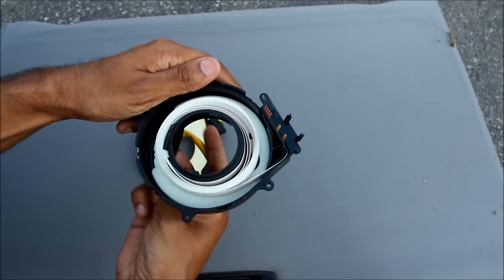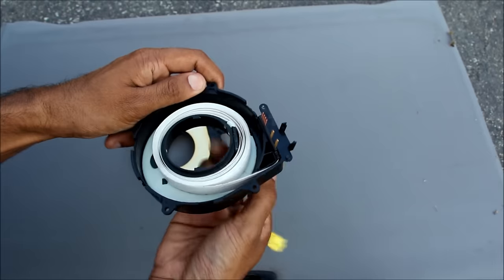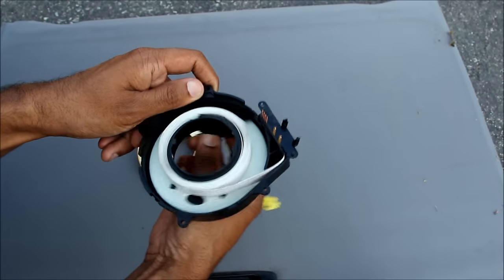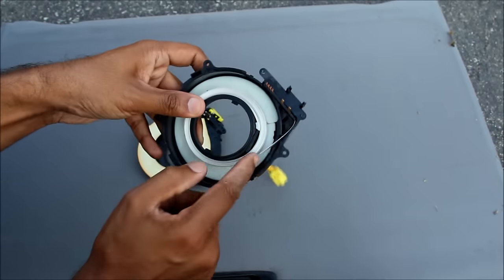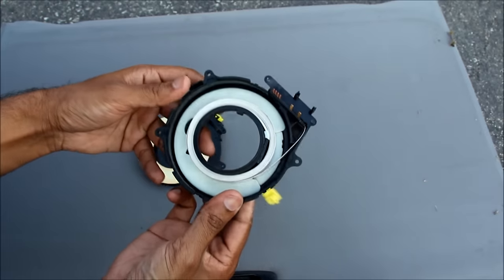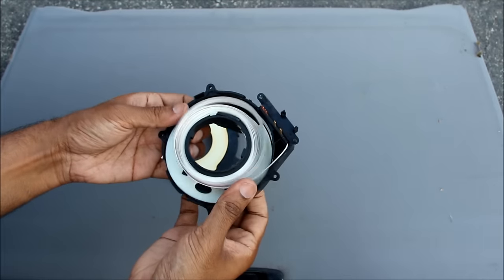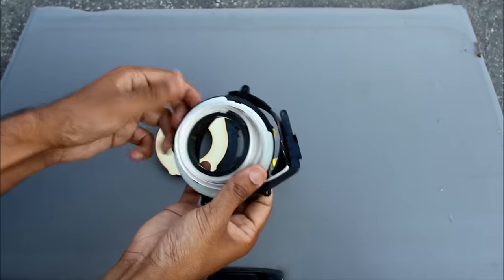Now if you wind it to the other direction, you can see the cable contracts and tightens up until it reaches the end. And again there's a chance that you could break the cable if you turn it even further. And as you'll notice if I take this thing apart the mechanism is fairly simple.